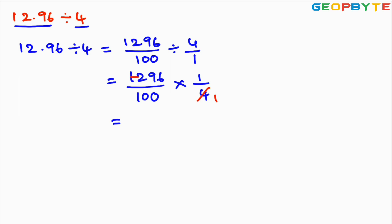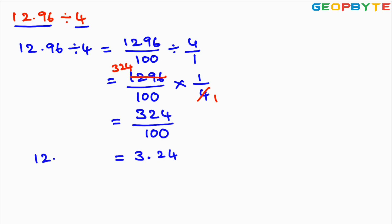The reciprocal of 4 by 1 is 1 by 4. Here 4 324s are 1296, so we get 324 divided by 100. If we divide any number by 100, we move the decimal point from right to left by two places, giving us 3.24. The result of 12.96 divided by 4 is 3.24.